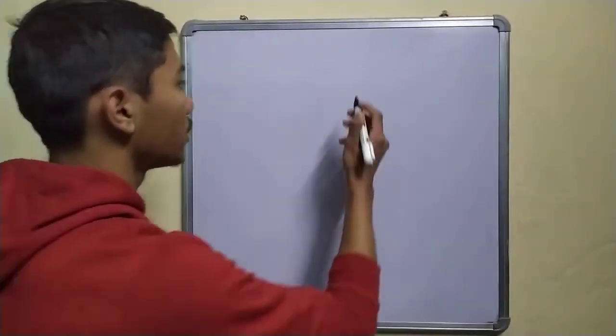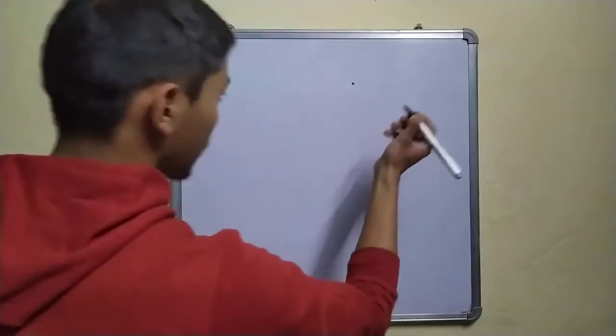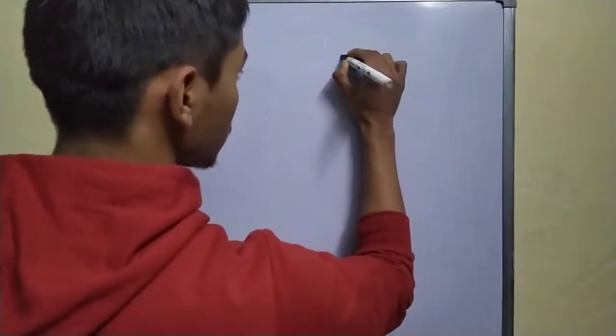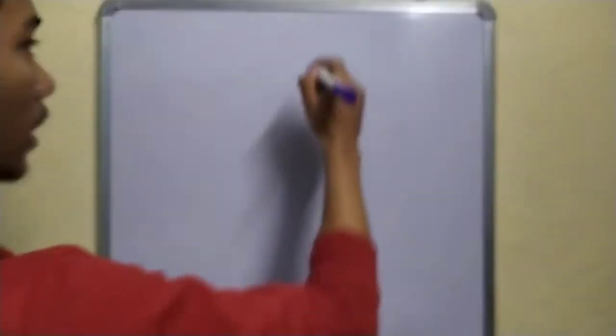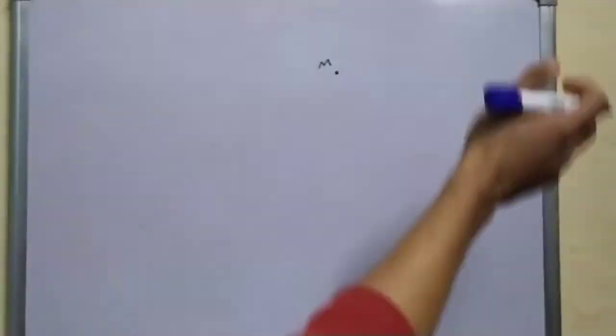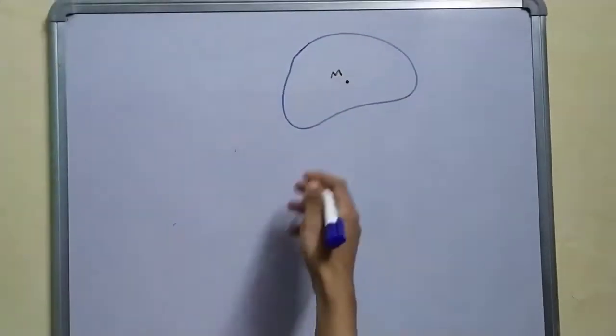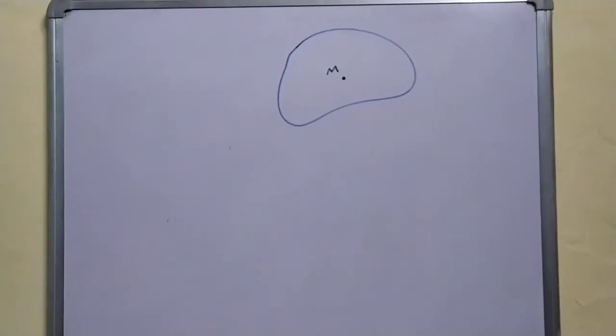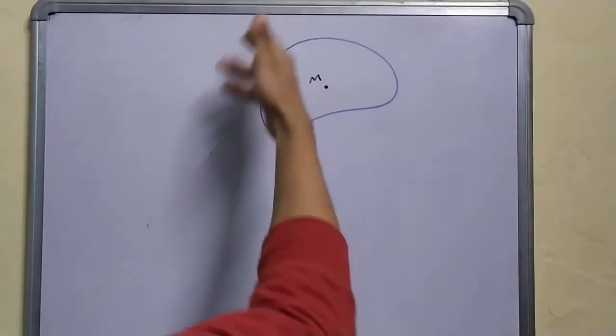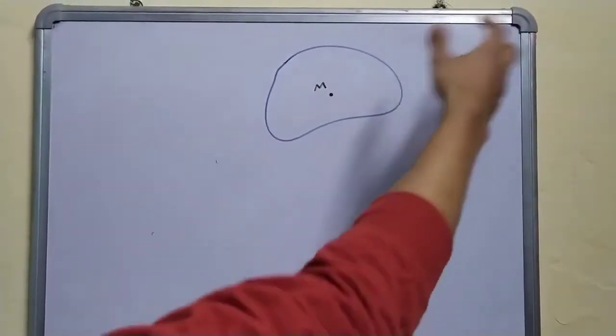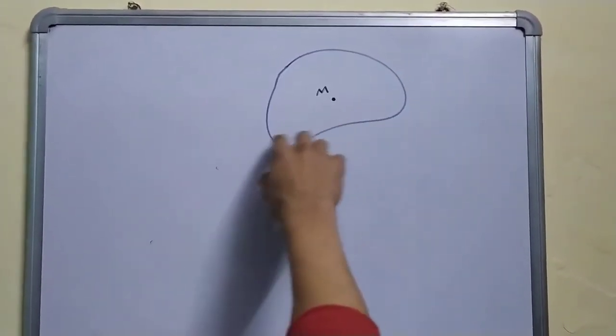In this video we will be trying to find a relation between the gravitational flux through a surface and the masses considered in the system. Let's say you have a particle of mass M, and you construct an imaginary surface around it — it can be of any shape. Now you want to calculate the gravitational flux through this surface.